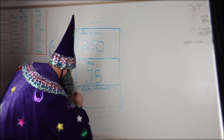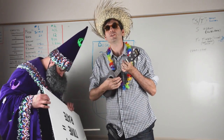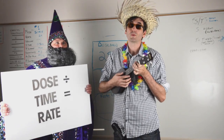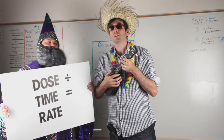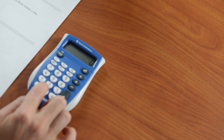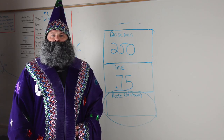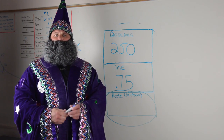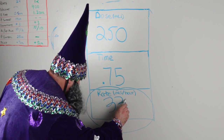Now you can figure out the rate. Dose divided by time equals rate. So 250 milliliters divided by 0.75 hours equals 333.33 milliliters per hour. You can only use whole numbers with the pump. You can round a fraction of a rate up or down to the nearest whole number, so the rate in this case is 333 milliliters per hour.